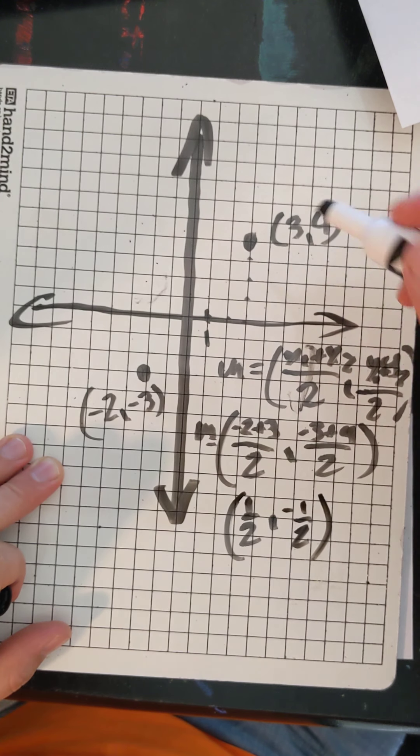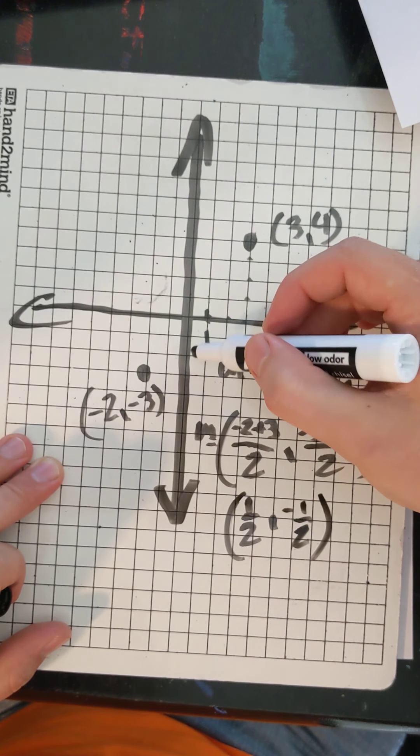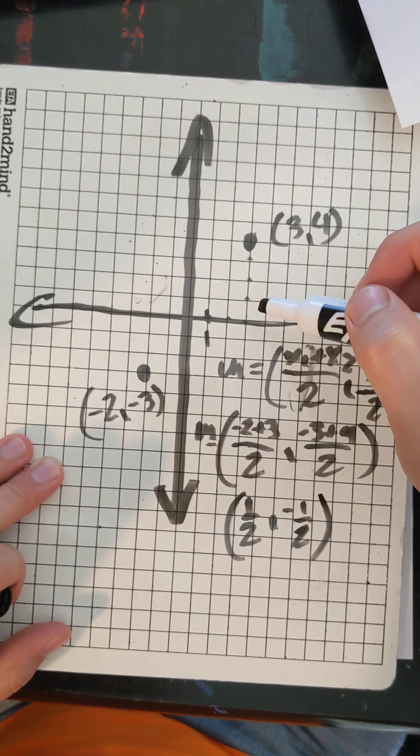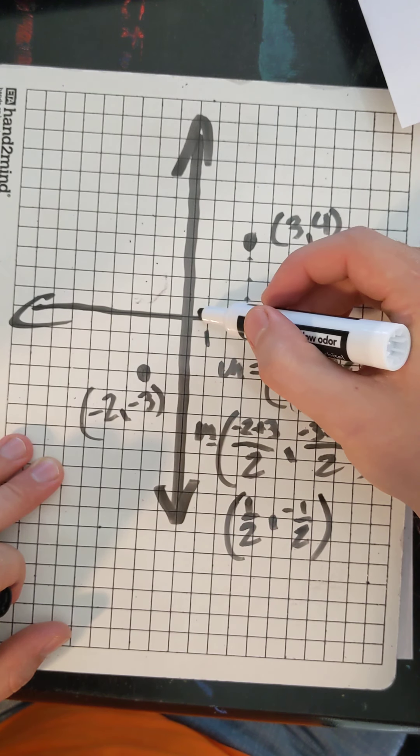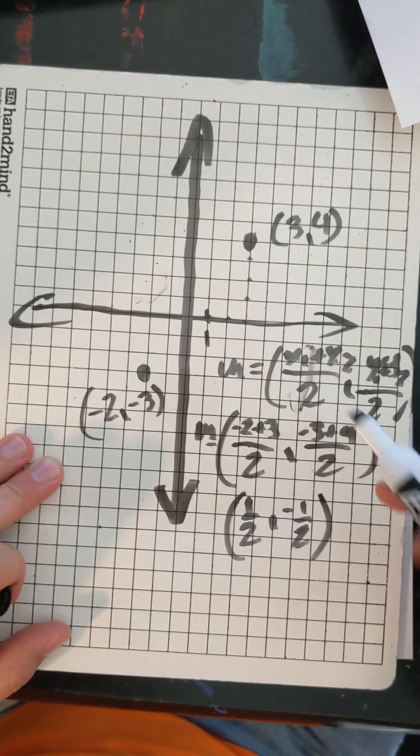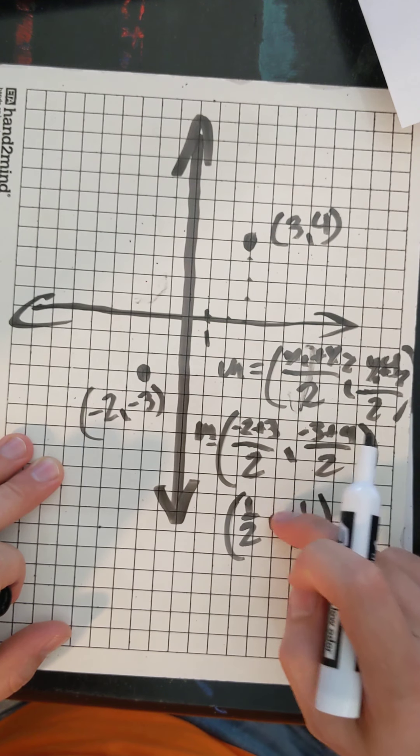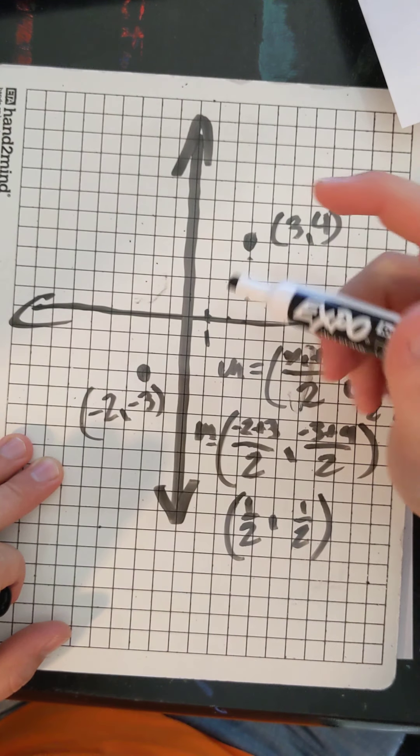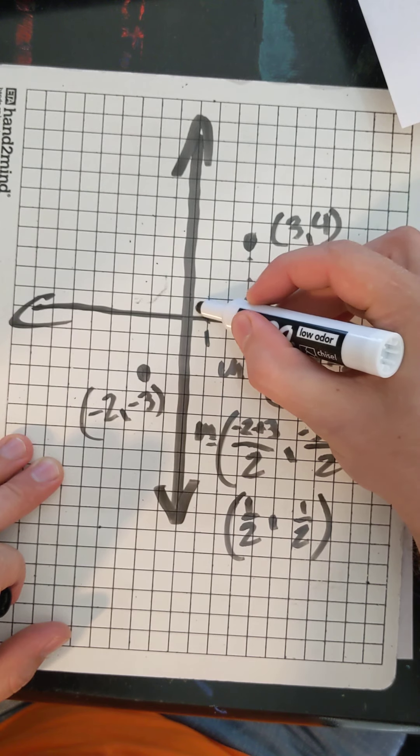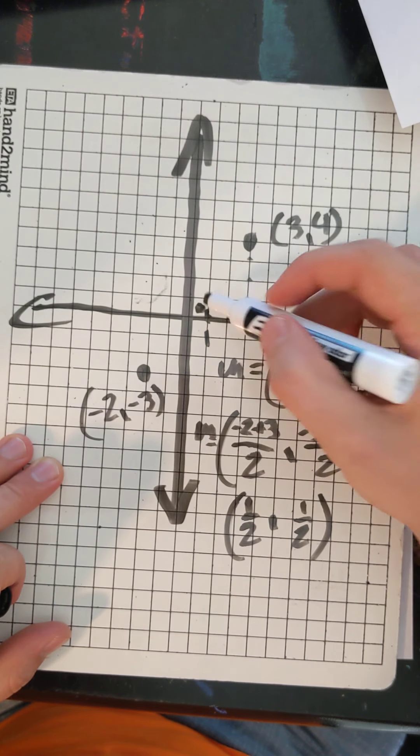Maybe I should have incorporated fractions into this one. All right. So, we're going to go to 1 half, negative 1 half. So, positive 1 half. But what am I thinking? Negative 3 plus 4 is a positive. Positive 1. So, we're going to go to positive 1 half, positive 1 half. Which approximately is right here. And there's our midpoint.